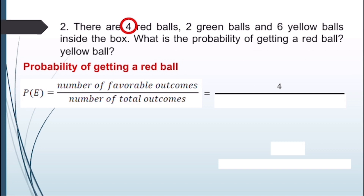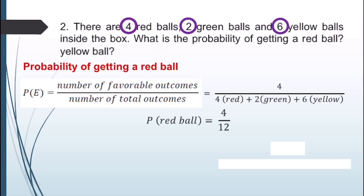To get the number of total outcomes, we add all the balls in the box: 4 (red) + 2 (green) + 6 (yellow) = 12. Therefore, the probability of getting a red ball is 4/12, which in lowest terms equals 1/3. This can also be expressed as a decimal: 1 divided by 3 equals approximately 0.33, or in percent, 33%.